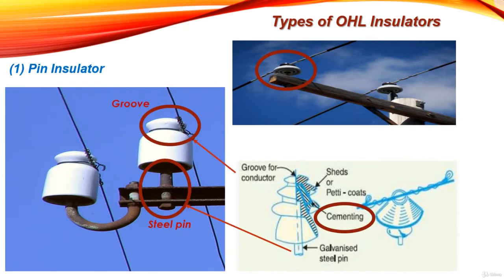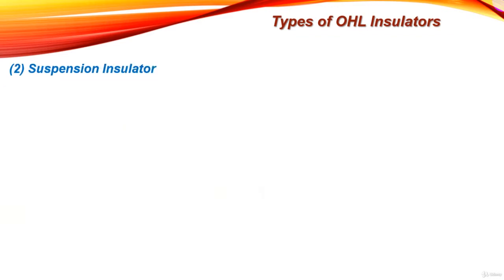Pin type insulators are used for transmission and distribution of electric power at voltages up to 33 kilovolts. Beyond an operating voltage of 33 kilovolts, pin type insulators become too bulky and hence uneconomical. So when the voltage increases above 33 kilovolts, the solution is to use a suspension insulator.